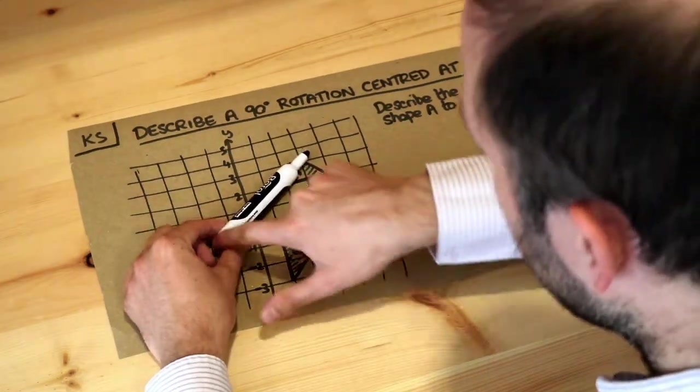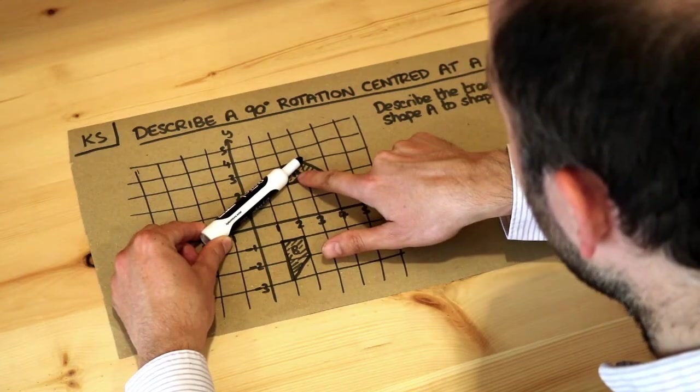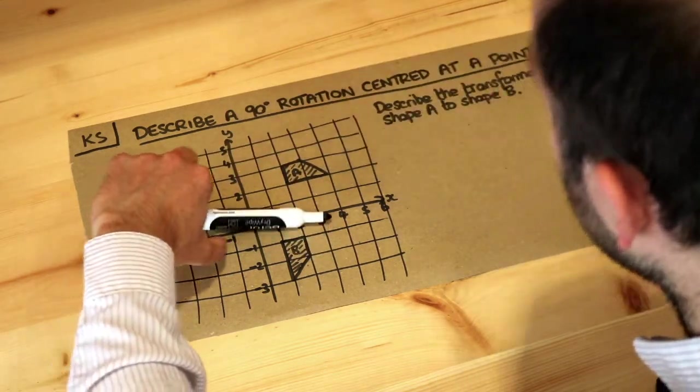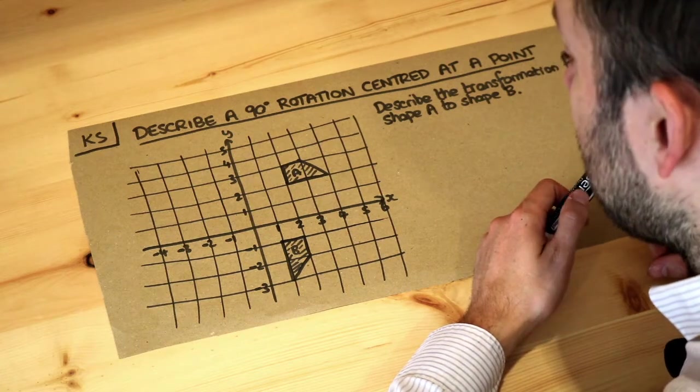If I have my pen here and that was a center rotation and this pen end is pointing at the shape A, it's rotating a bit to get to B around this point. Now how do we identify what this center rotation is?